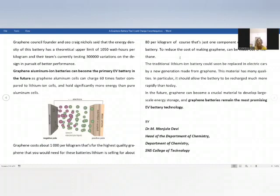To reduce the cost of making graphene, it can be made out of methane. The traditional lithium-ion batteries could soon be replaced in electric cars by a new generation made from graphene. This material has many qualities.